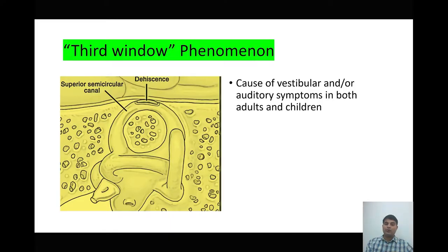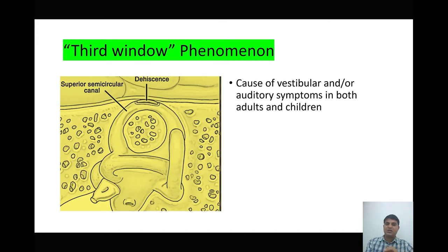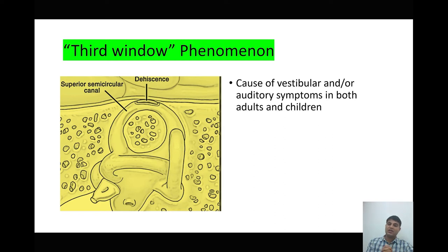This important topic is also known as the third window phenomena. It is an important cause of vestibular or auditory symptoms in both adults and children. Normally we have one oval window and one round window, but here sound is leaking through a third window, which is in the superior semicircular canal.